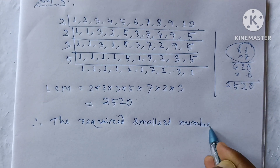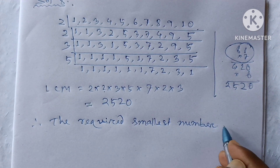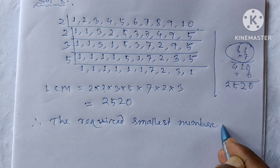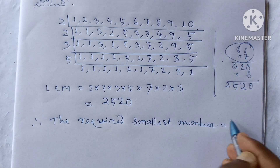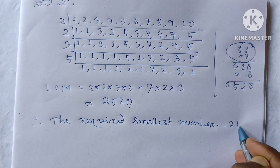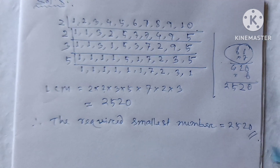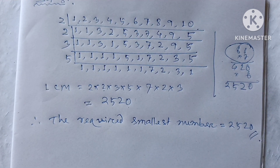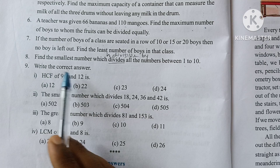Now the smallest number is equal to 2520, so the question number 9 was — write the correct answer.